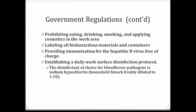The disinfectant of choice for bloodborne pathogens is sodium hypochlorite, or household bleach, freshly diluted — one part bleach to ten parts water. This needs to be fresh daily. Once you get into class, you will pour one part bleach into the spray bottle and fill the rest with water to create your solution. After each and every lab, tables and chairs are sprayed down and wiped with the 1-to-10 bleach solution to kill all microorganisms you might have been working with.